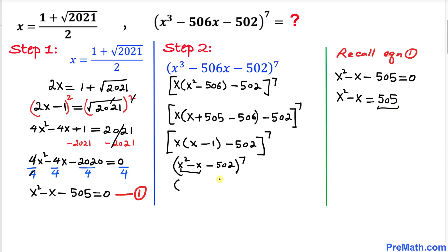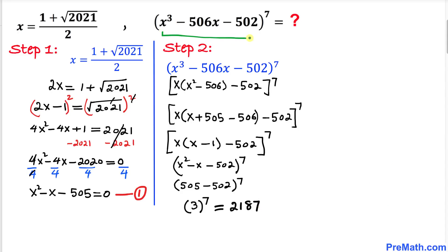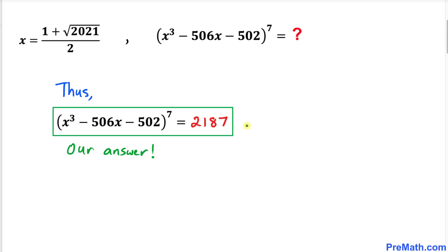We now have 505 minus 502, all to the power of 7. That simplifies to 3 to the power of 7. Calculating 3 to the power of 7 — that is 3 multiplied 7 times — gives us 2187. So the value of the entire polynomial turns out to be 2187. That's our final answer. Thanks for watching, and please don't forget to subscribe to my channel for more exciting videos!